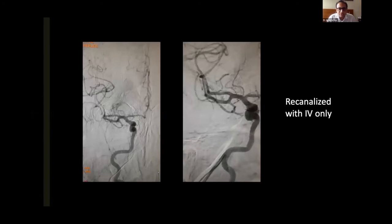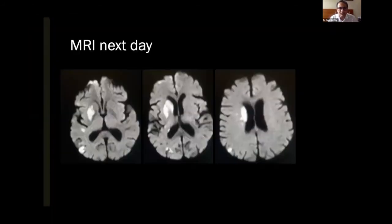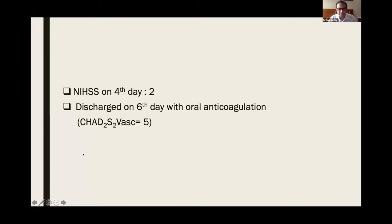The diagnostic shot showed the vessel was open with IV thrombolysis alone, so we did not proceed with mechanical thrombectomy. She started improving right away, and by next morning NIH was 4. CT showed no bleed. MRI showed we could save a lot of brain — there was a small area of damage in the basal ganglia and a little in the cortex. Outcome was good. Patient was discharged on day six with oral anticoagulation. CHA₂DS₂-VASc score was 5. So far, this was a copybook situation.